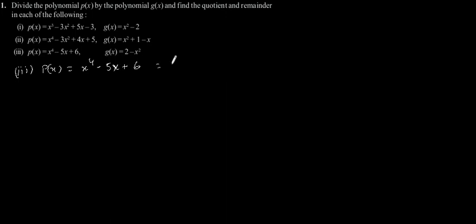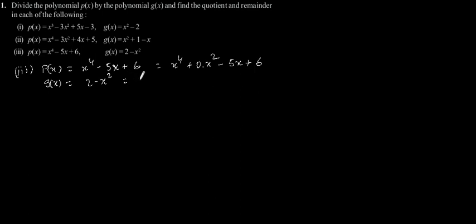Now the third part. P(x) is equal to x to the power 4 minus 5x plus 6. This can also be written as x to the power 4 plus 0 times x squared minus 5x plus 6. And g(x) is equal to 2 minus x squared, which can be rearranged as minus x squared plus 2. Now let's divide.